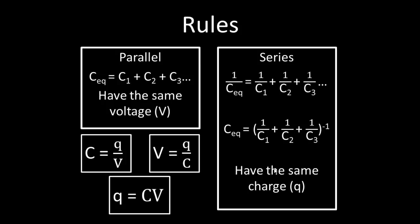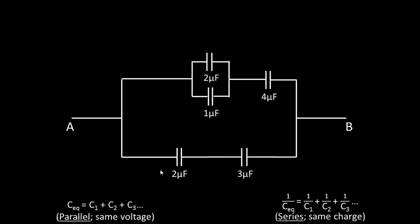Now let's go over these three equations. The first is C equals Q over V, meaning capacitance equals charge over voltage. We can solve for Q by multiplying both sides by V, giving Q equals C times V. Dividing both sides by C gives V equals Q over C. If we have two out of three variables, we can solve for the third using simple algebra.